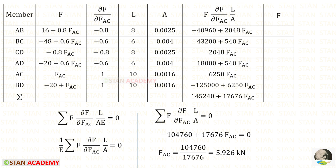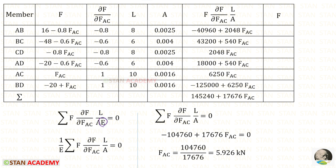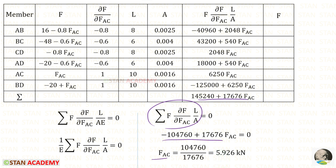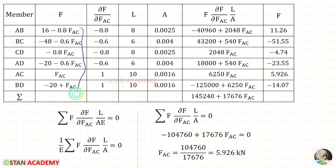Now we apply Castigliano's theorem of least work: the redundant reaction components of a statically indeterminate structure are such as to make the internal strain energy a minimum. The equation sets the sum of F × (∂F/∂FAC) × (L/A) equal to zero. Since Young's modulus E is not given and is assumed equal for all members, it can be taken outside and cancelled. Applying the summed expression, we solve for FAC and get 5.926 kN.